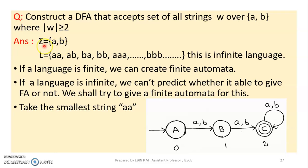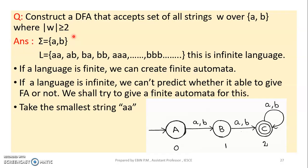Now, sigma means alphabet. So that is the alphabet. We are creating a language with the condition that the string length is greater than or equal to 2. So the minimum string length is 2.